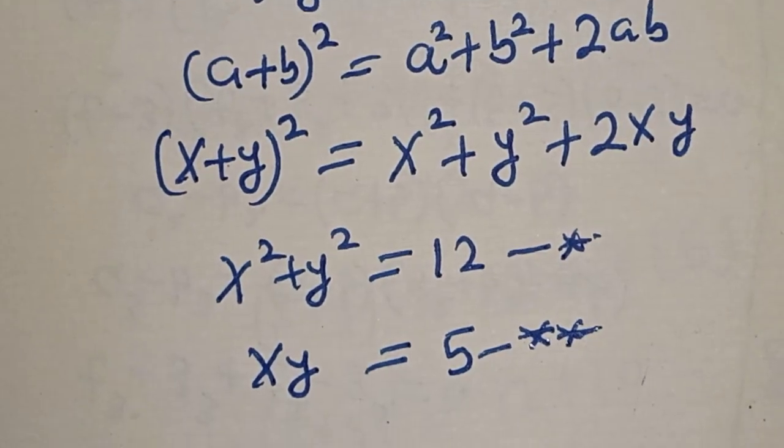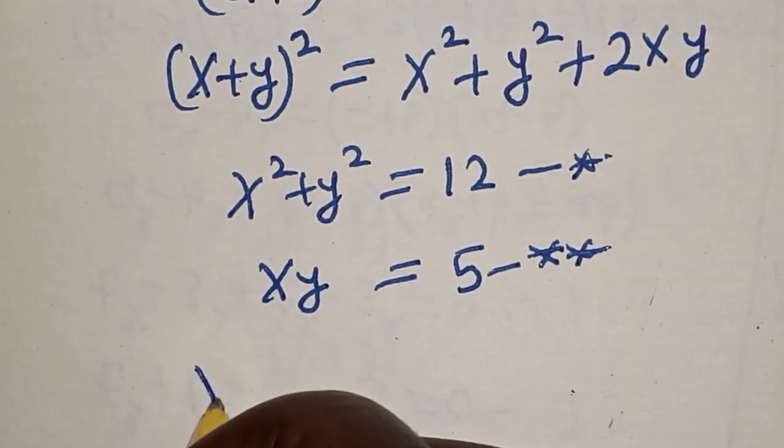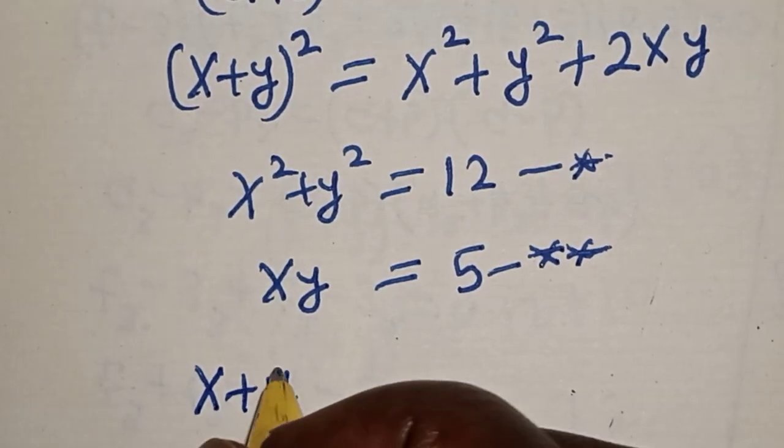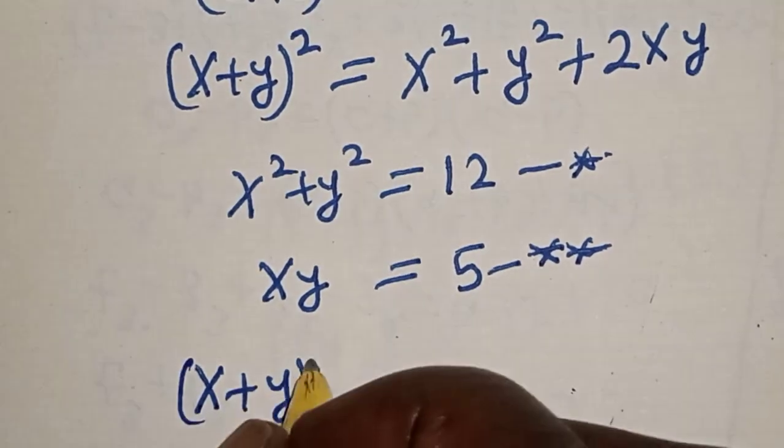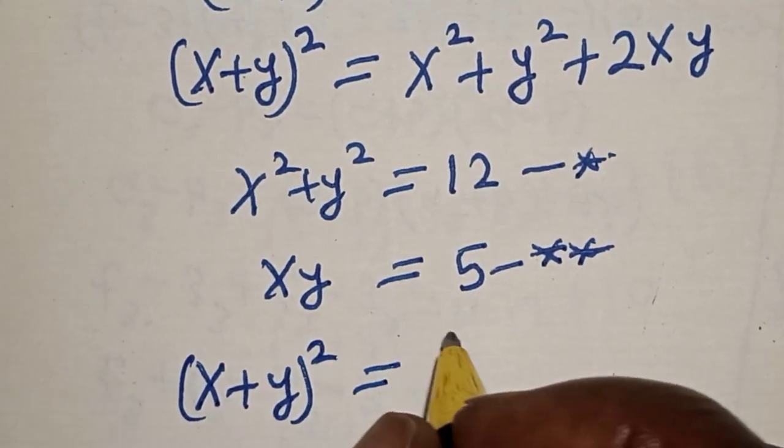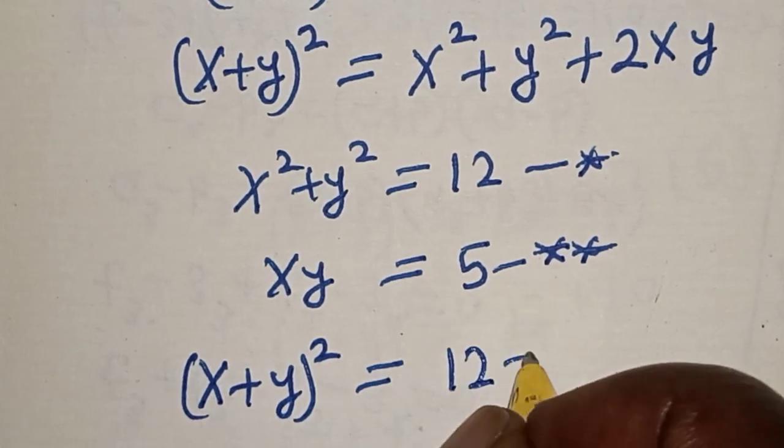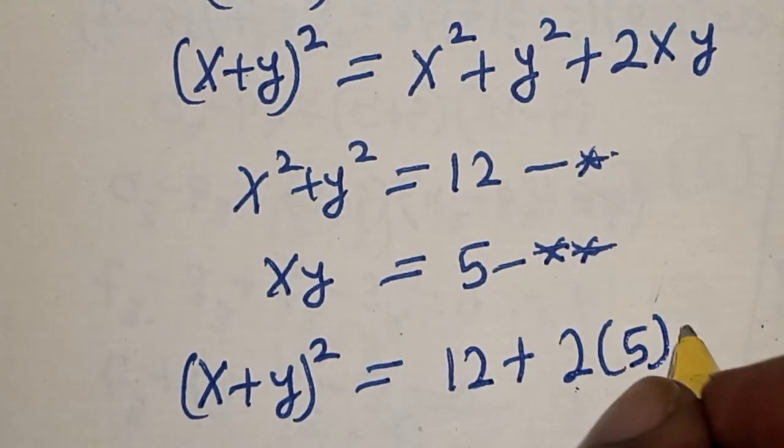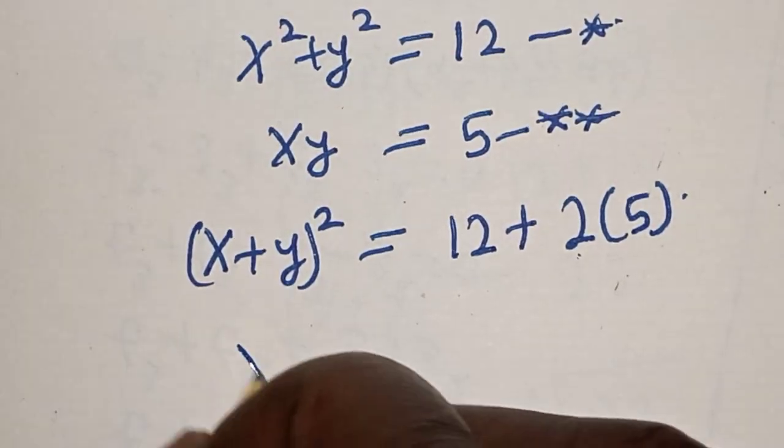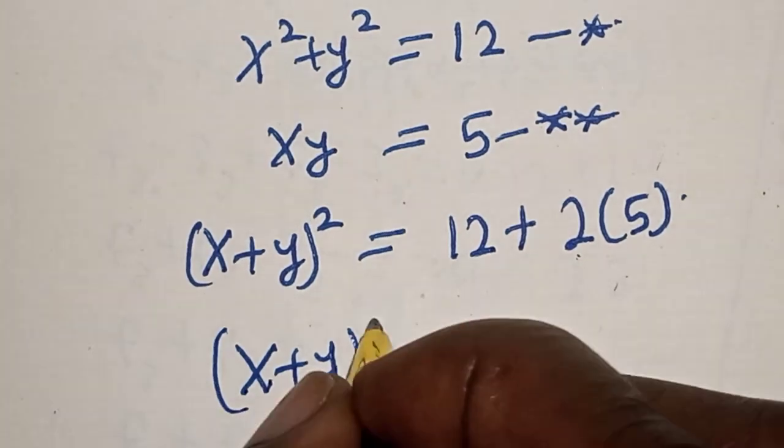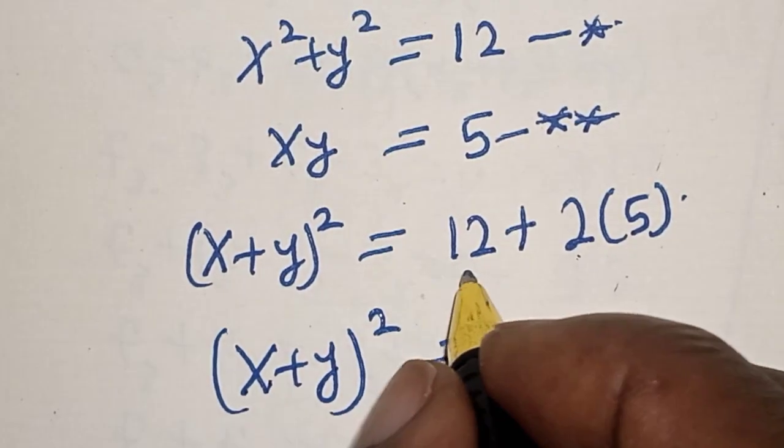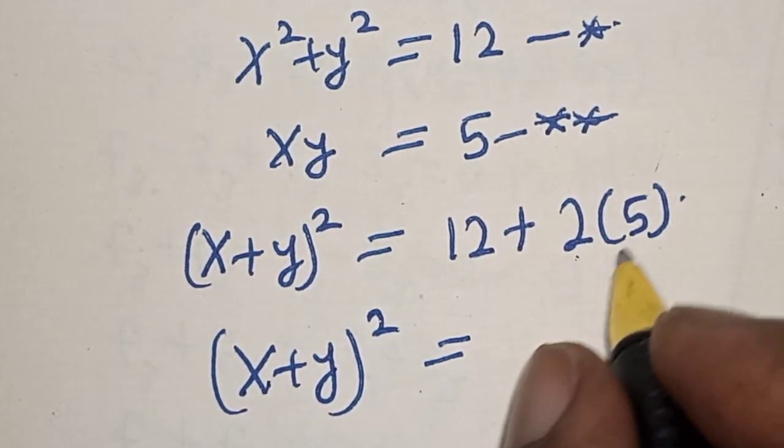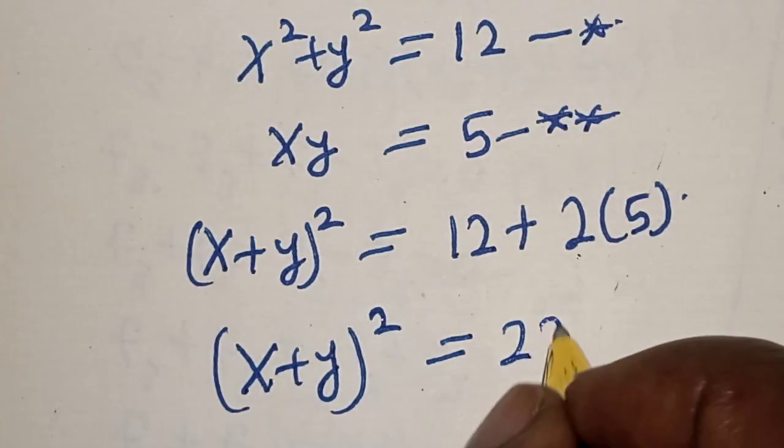Now let's substitute: x plus y squared is equal to 12 plus 2 into 5. Then x plus y squared is equal to 12 plus 2 times 5, that is 10, so 22.